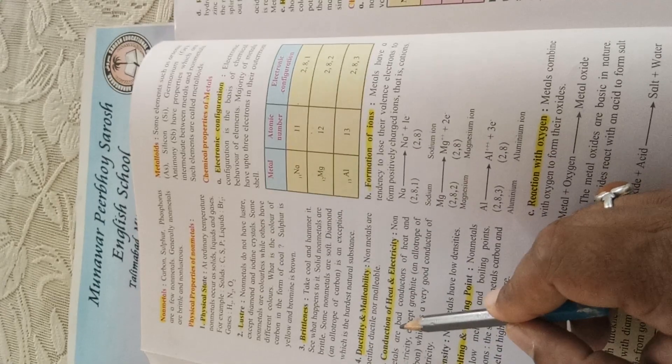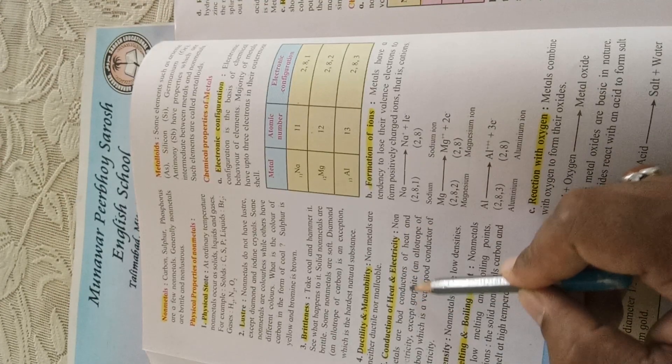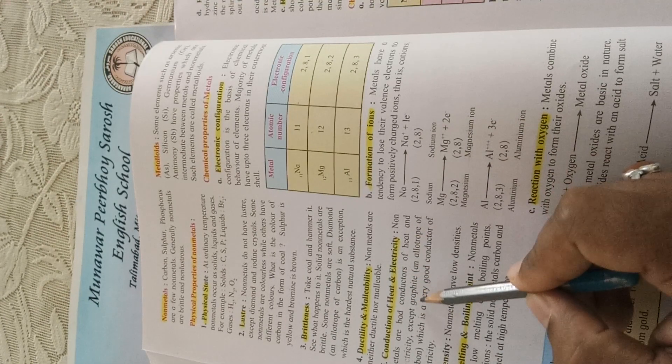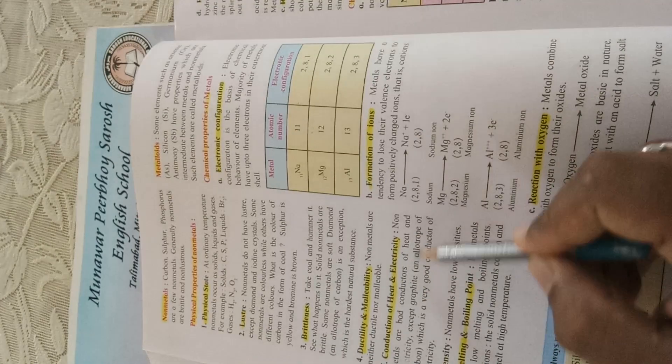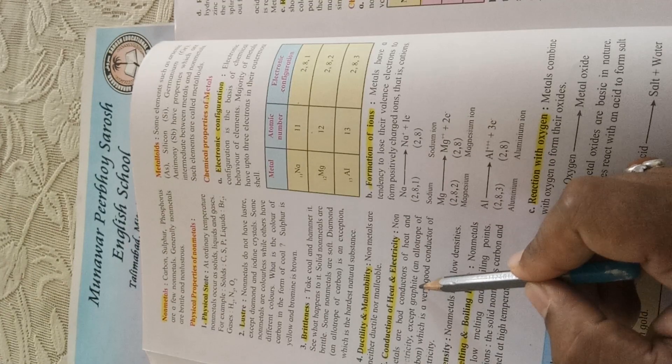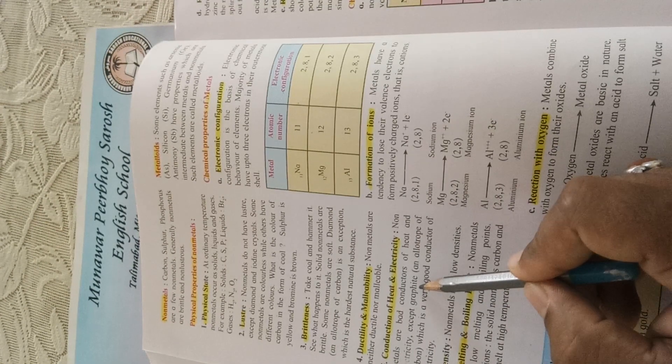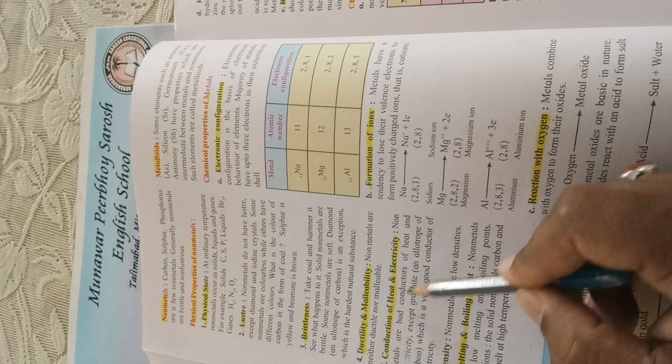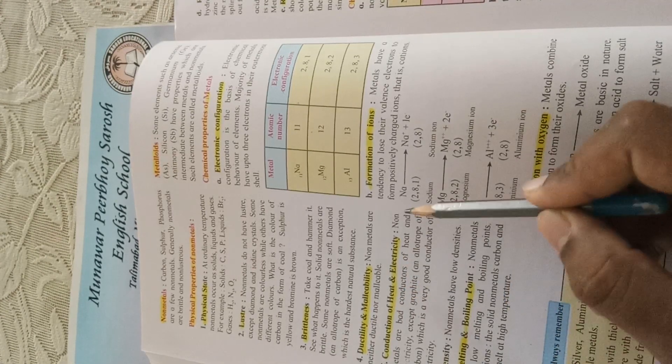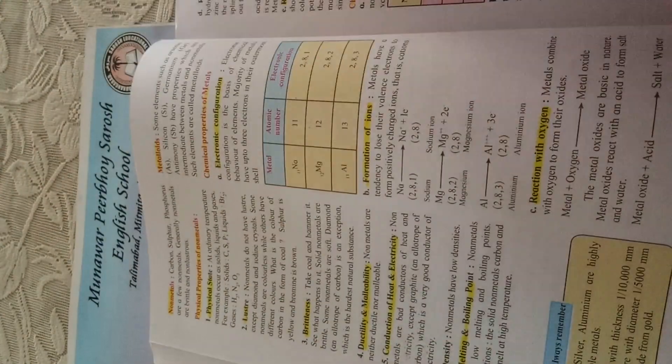Now another property is conduction of heat and electricity. Nonmetals are bad conductors of heat and electricity, except graphite, another allotrope of carbon. Graphite is a very good conductor of electricity—electricity can be passed through it. Other nonmetals are bad conductors of both heat and electricity.